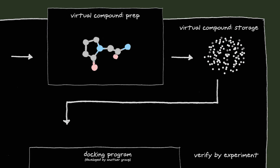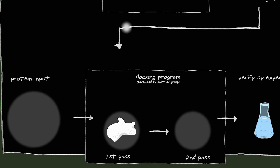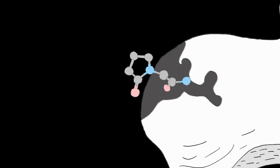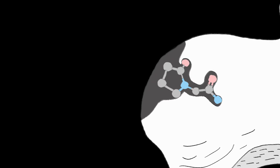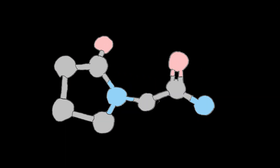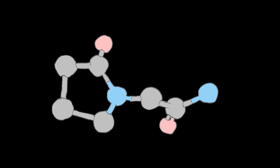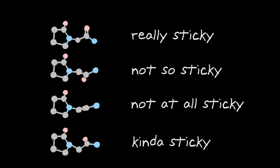Virtual Flow also runs docking programs. Docking programs bring together the protein of interest with each compound. The program then checks whether the compound is able to bind to the protein. Each compound is able to take on many shapes. The program tests many thousands and gives each shape a stickiness score depending on the likelihood that it will attach to the protein.